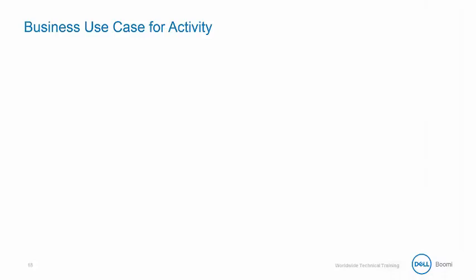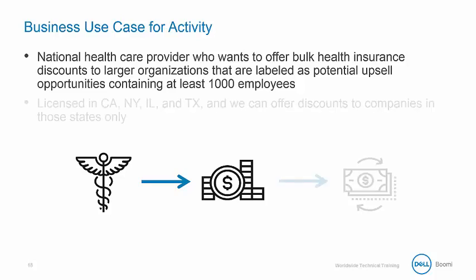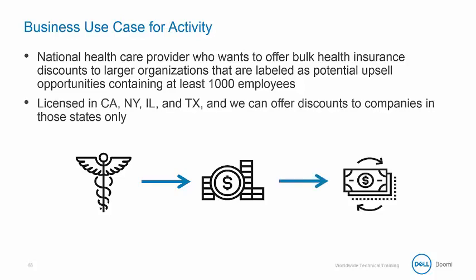To review the business use case for our business rules activity: we are a national healthcare provider who wants to offer bulk health insurance discounts to larger organizations labeled as potential upsell opportunities containing at least 1,000 employees. We are licensed in 4 states and can offer discounts to companies in these states only.